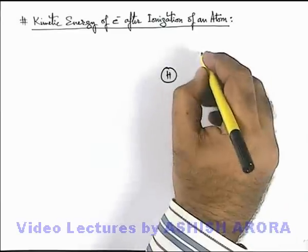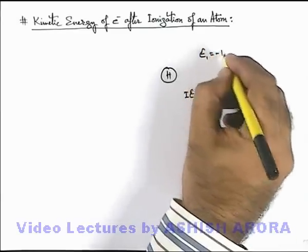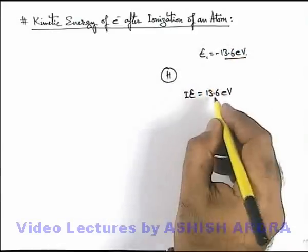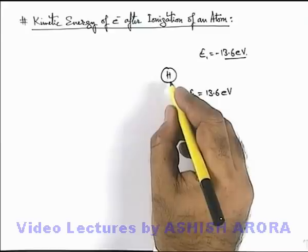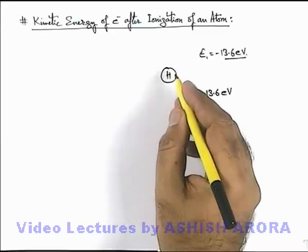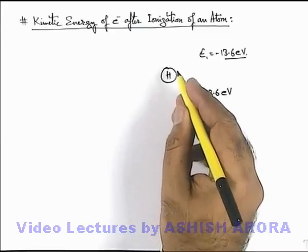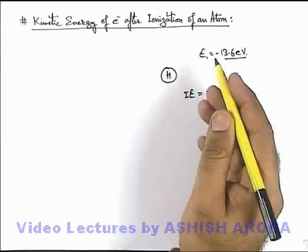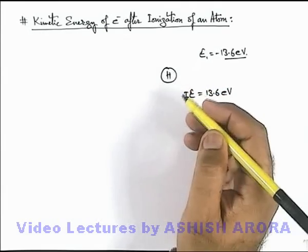in ground state, energy of electron is minus 13.6 eV. So if this much amount of energy is supplied externally, it'll excite to n equals infinity state, so an electron can be considered to be ejected out from hydrogen atom.